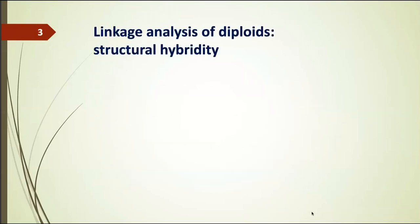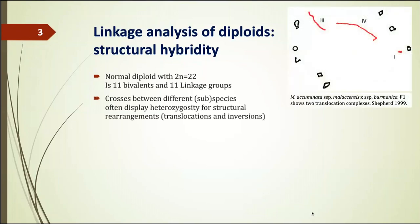The story starts with the genetics, the linkage analysis of diploids. We do not talk about those plants that are infertile. We don't talk about the triploids; we talk about the diploids and the complications of rearrangements and structural hybridity. We have to realize that Musa diploid bananas have 22 chromosomes, meaning they have 11 bivalents and also 11 linkage groups. The crosses between different subspecies often display heterozygosity for structural rearrangements, including translocations and to a lesser extent inversions.